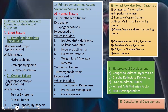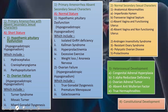Normal secondary sexual characteristics are divided into anatomical abnormalities — imperforate hymen, transverse vaginal septum, absent vagina with functioning uterus, and absent vagina with non-functioning uterus — and a second group comprising androgen insensitivity, resistant ovary syndrome, polycystic ovarian disease, and prolactinoma.